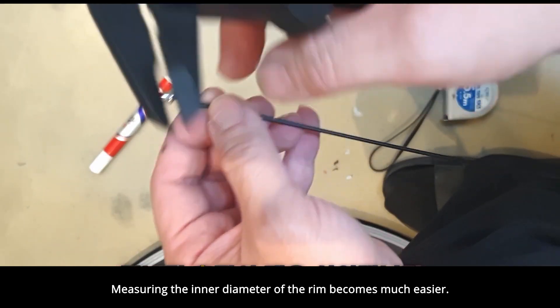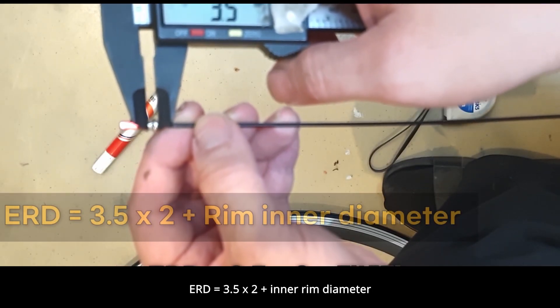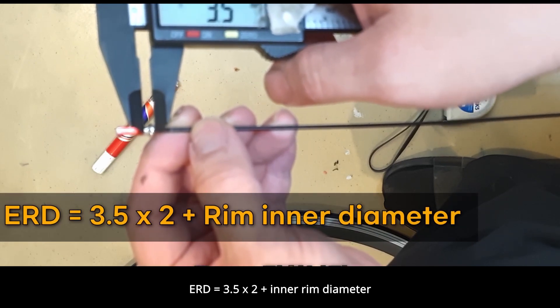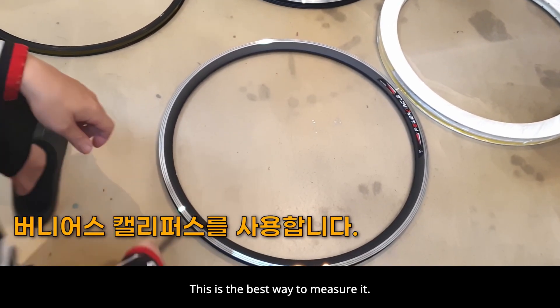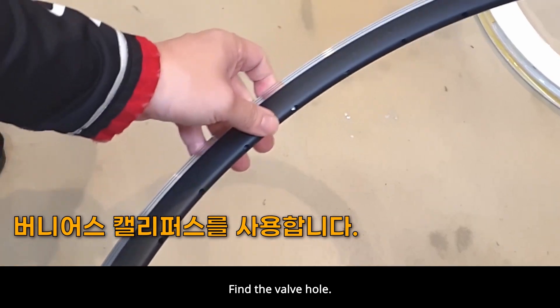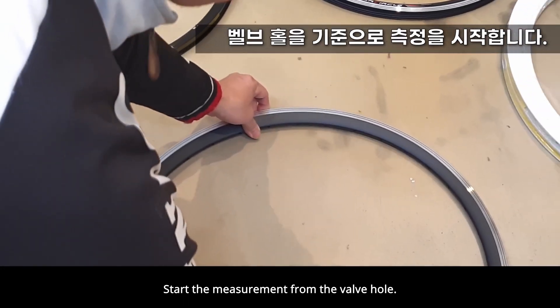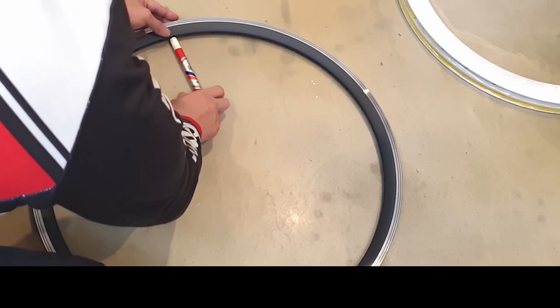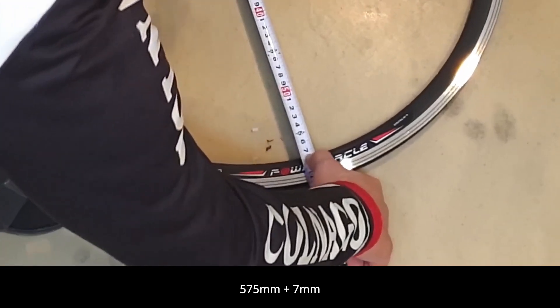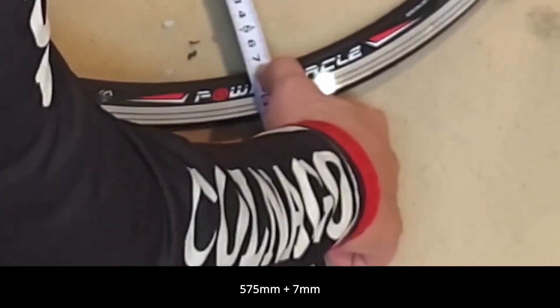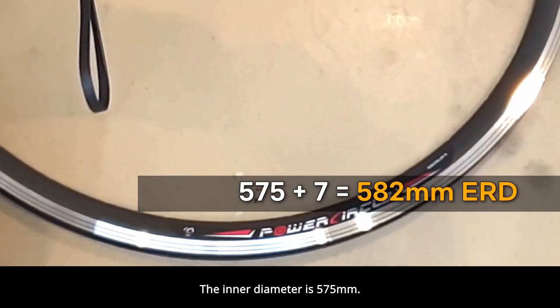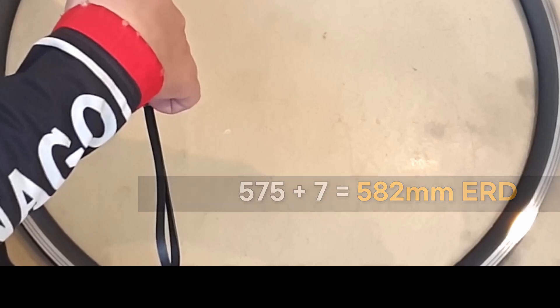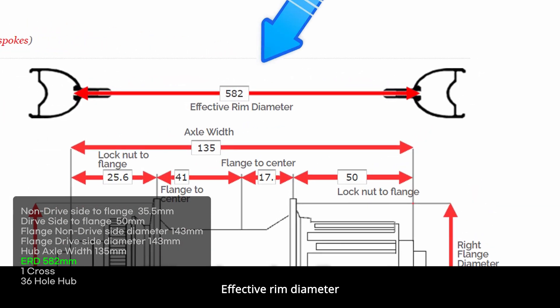This is the easiest method for measuring ERD. Measuring the inner diameter of the rim becomes much easier. ERD equals 3.5 by 2 plus inner rim diameter. Add 7 millimeters to it. This is the best way to measure it. Find the valve hole. Start the measurement from the valve hole. 575 millimeters plus 7 millimeters. The inner diameter is 575 millimeters.